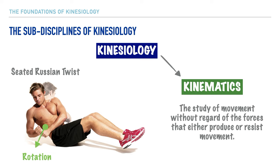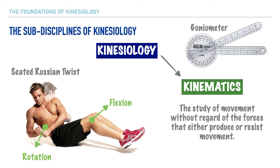We'd give attention to the rotational movement at his trunk — specifically rotation to his right side — and we might also note the flexed position of his knees. Going further, we could measure the joint angle in which his knees are flexed using a goniometer, a tool that specifically measures joint range of motion. In a nutshell, kinematics focuses on the type of movement, body position, and direction of movement.